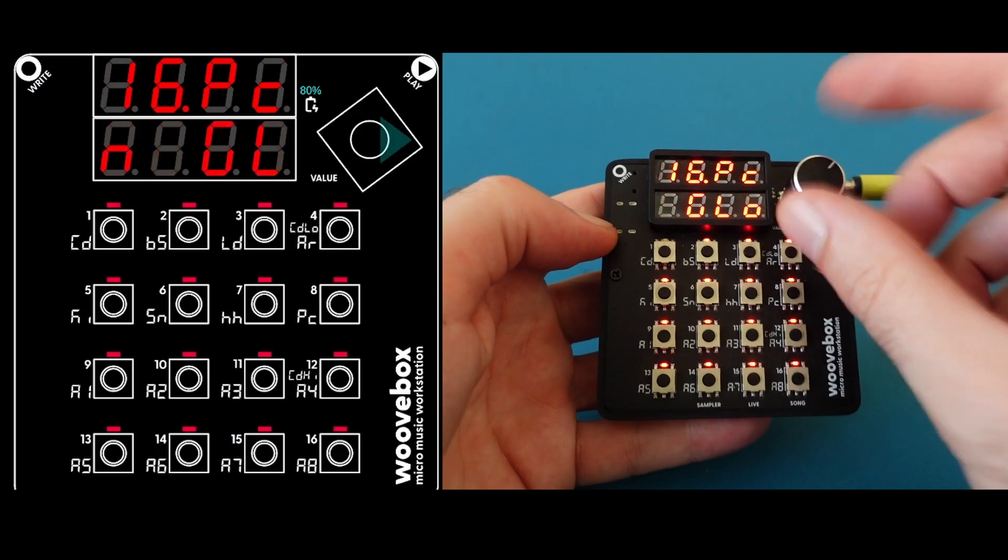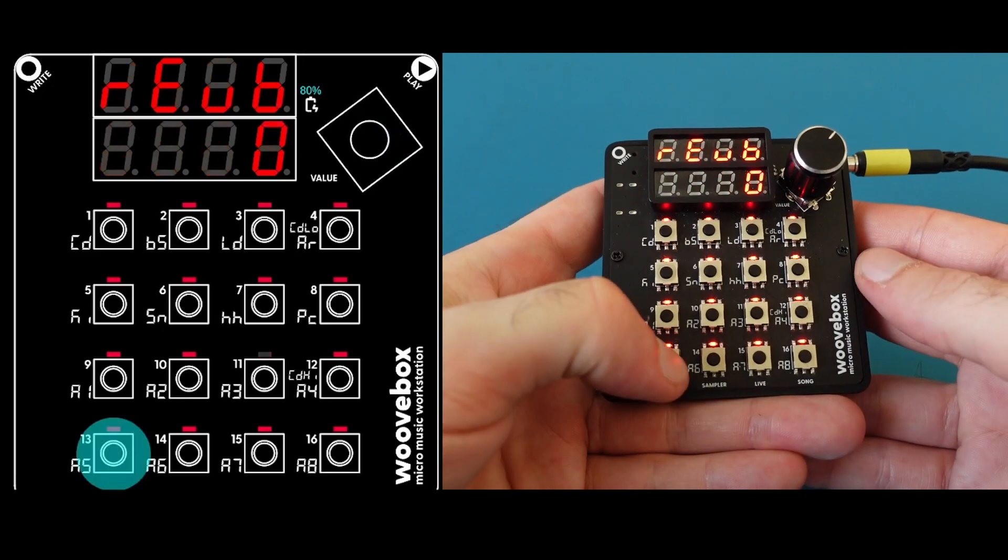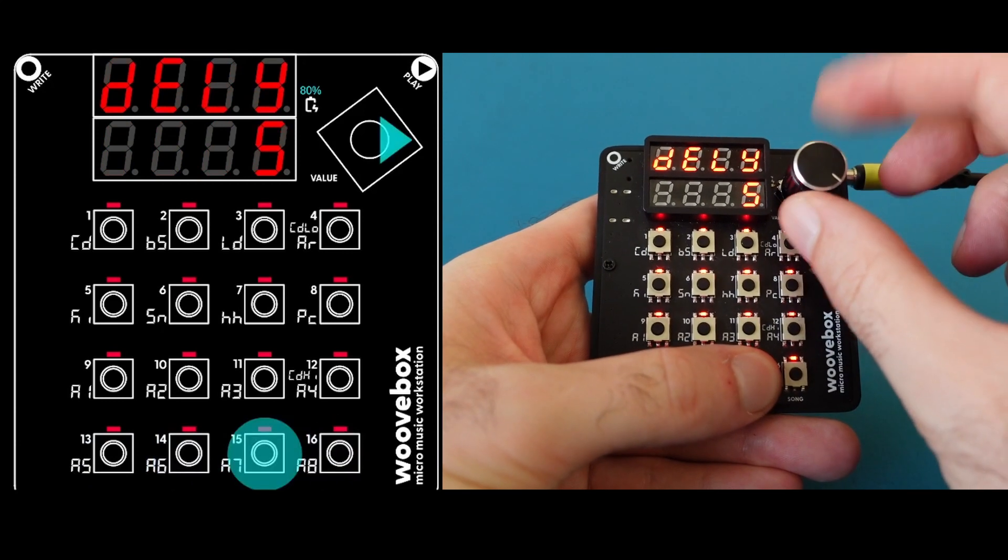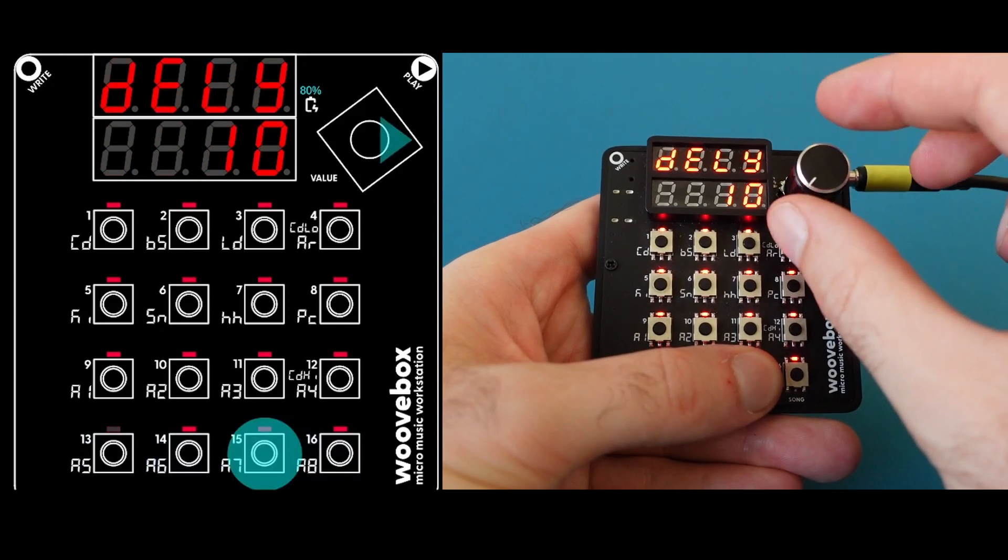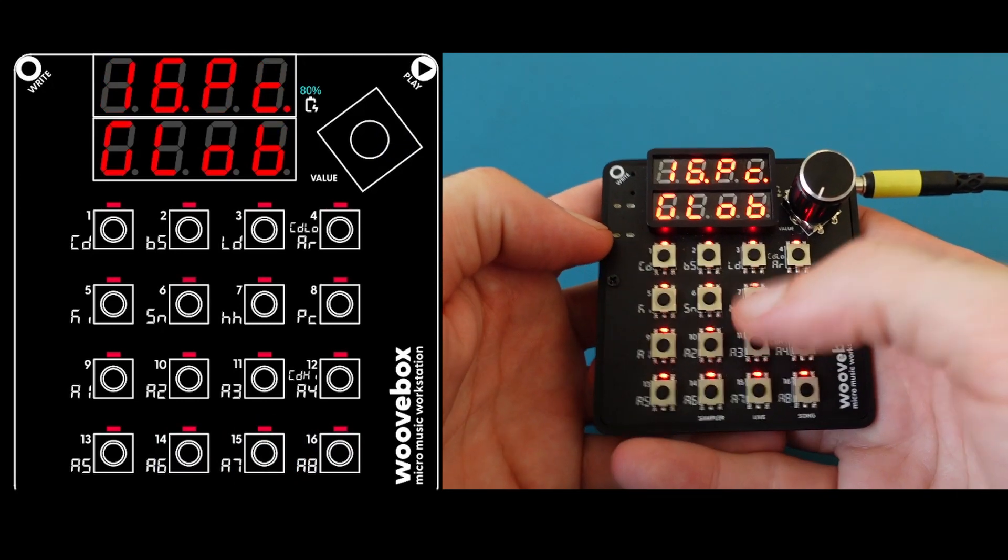Alright. And let's add a little delay to that. I think that's going to sound nice. So I'm going to go to the global page. The last row is all the effects sends. So we have reverb, chorus, delay one, and delay two. There you go. That sounds nice. Cool. Let's move on.